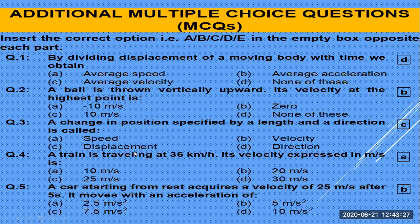A train traveling at 36 km/h — its velocity expressed in meters per second: multiply 36 by 1000 to convert kilometers to meters, then divide by 3600. You get 10 m/s. So the correct answer is 10 m/s.